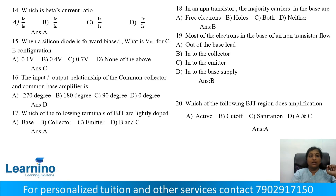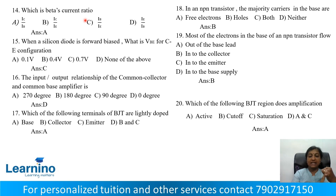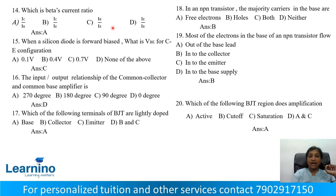Question number 14: Which is the beta current ratio? The current ratio IC by IB is beta. Correct answer is Option A: Beta.